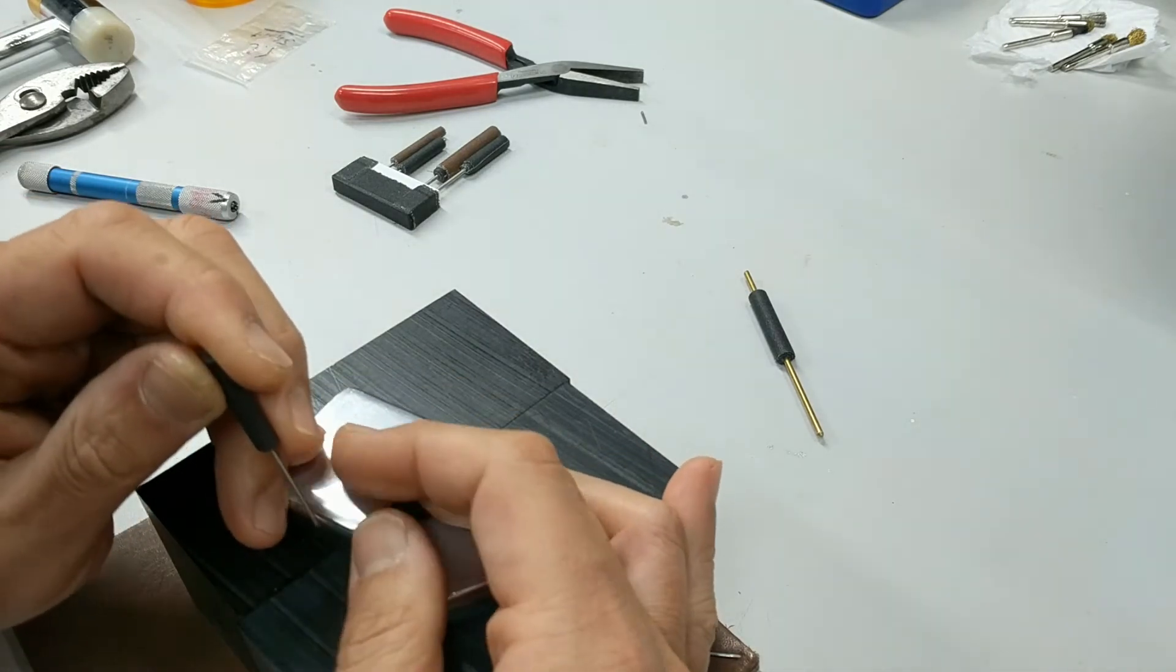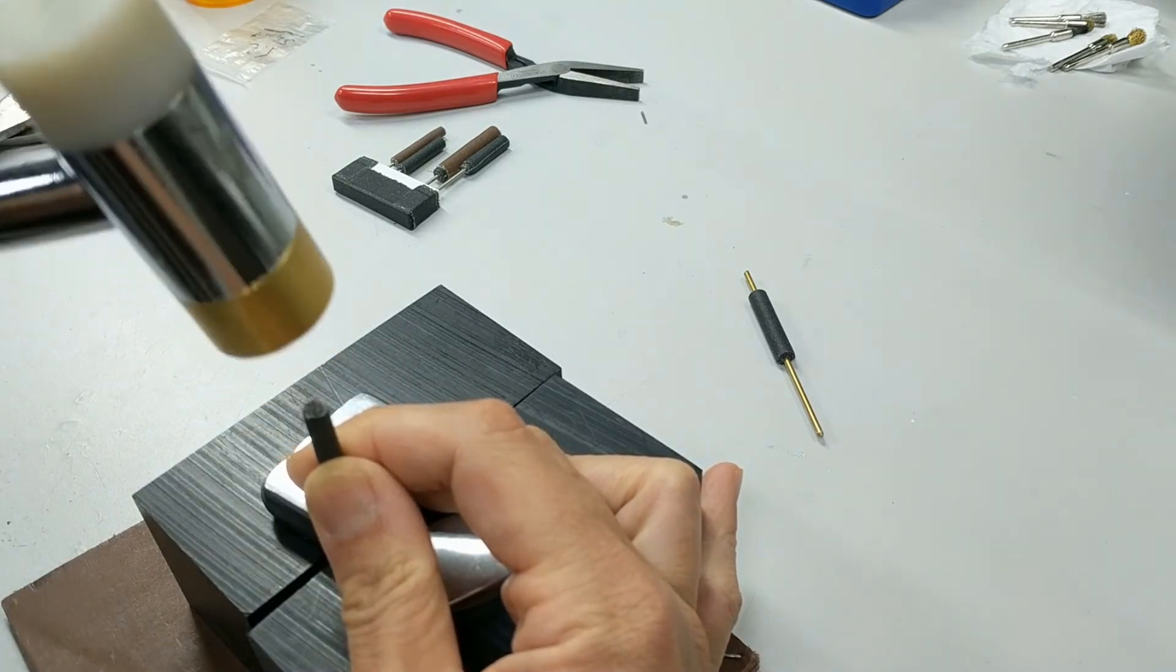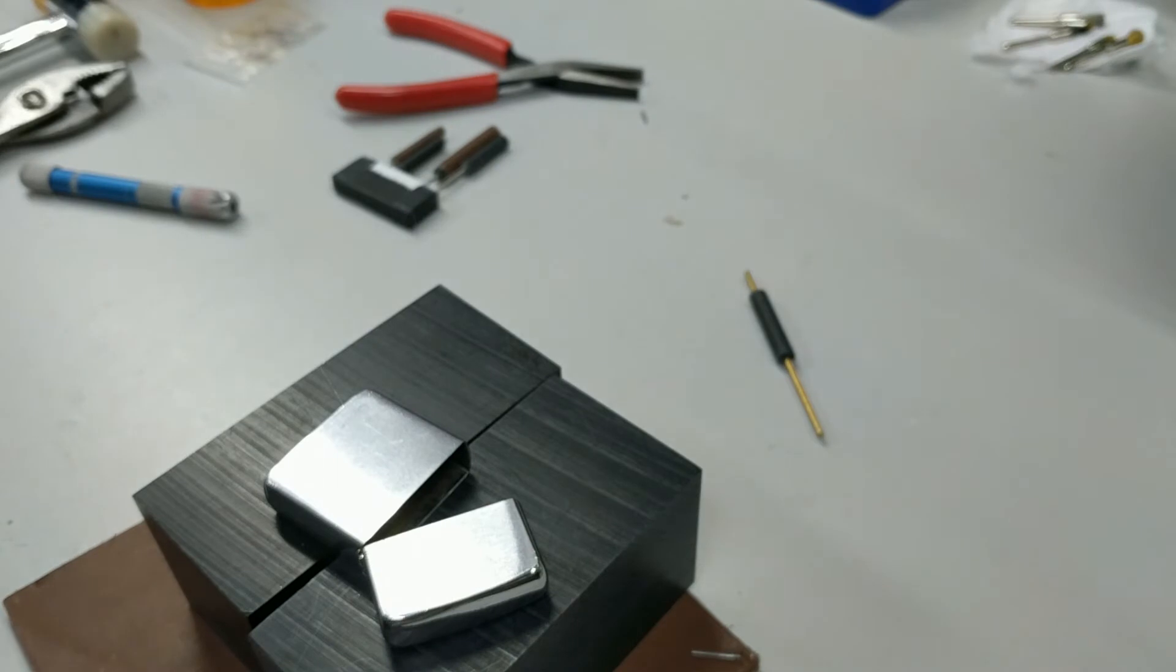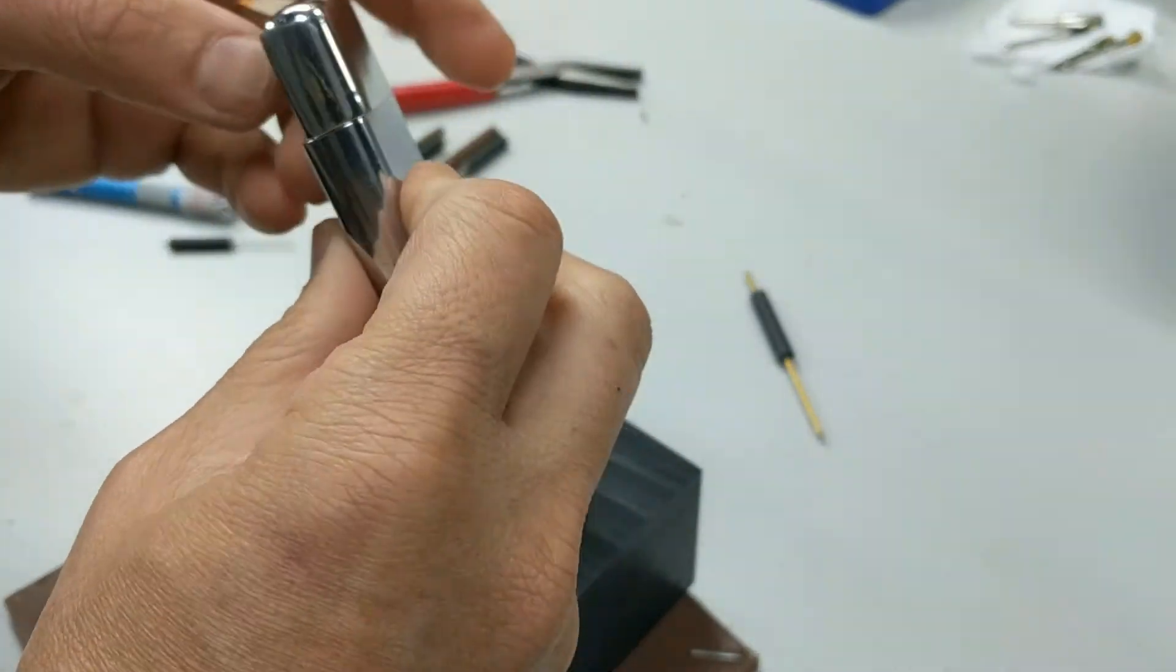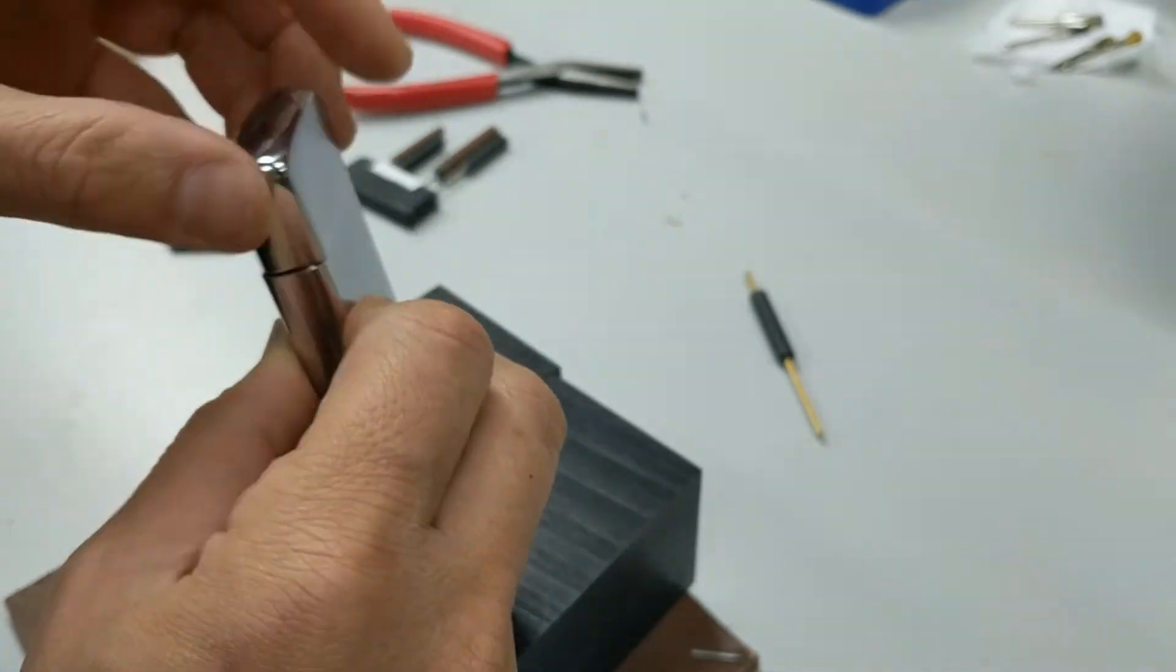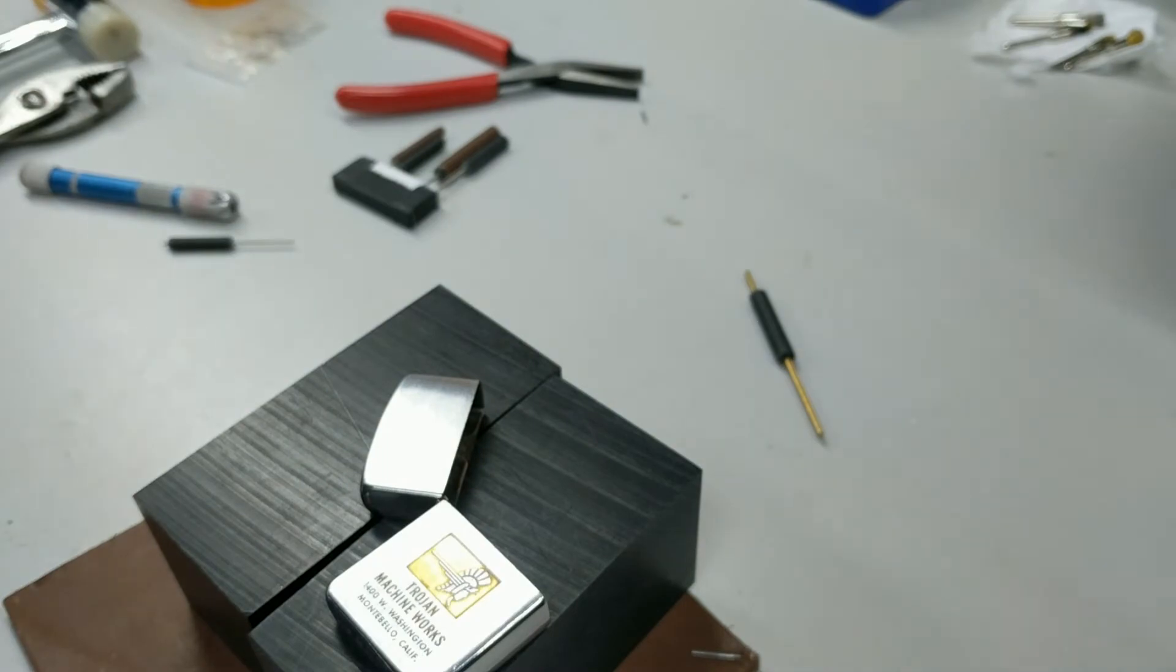At this point, I've already inserted the new hinge pin and I'm just basically tapping it in gently the last little bit. This is the 1.2mm hinge pin. So the hinge is a little bit tighter. I straightened out the hinge barrel so that the lighter would properly close.